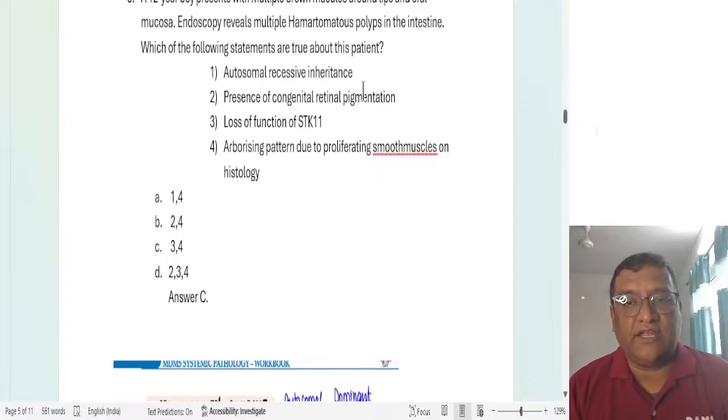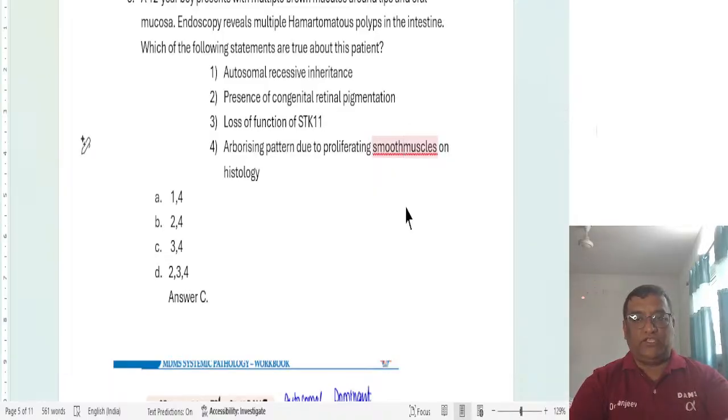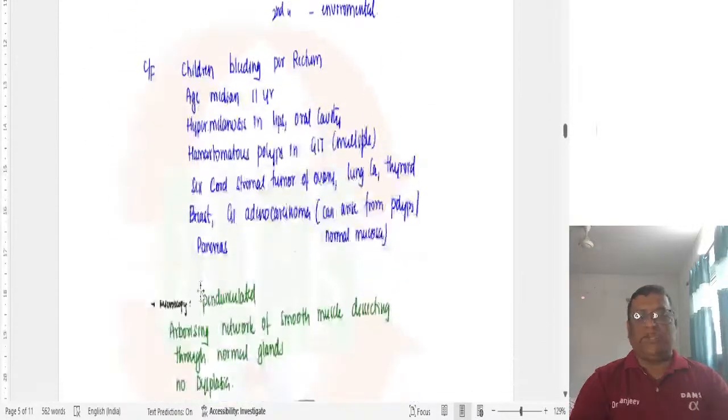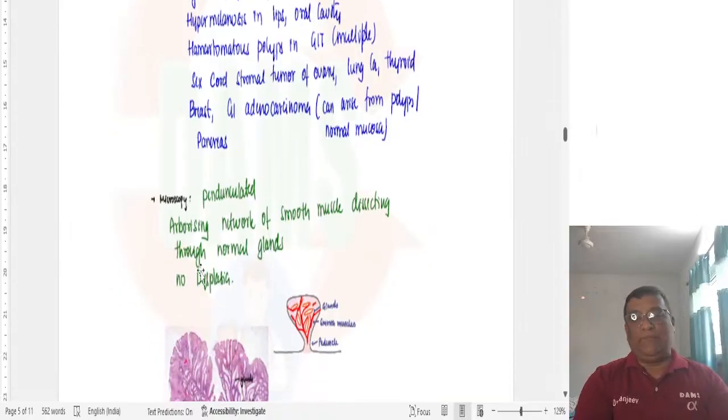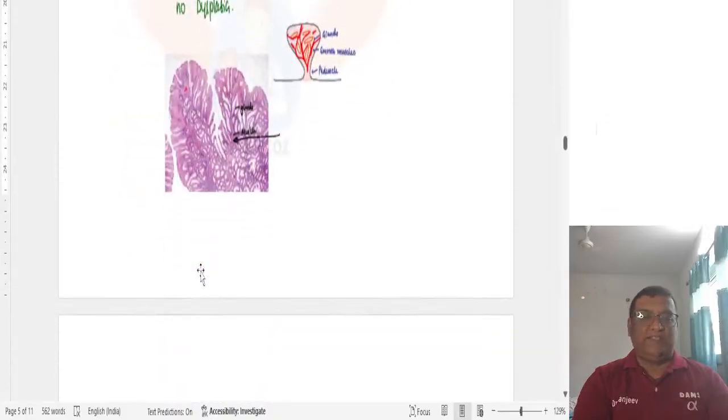Presence of congenital retinal hyperpigmentation? No, this would be seen with APC if it is seen. Loss of STK11? Yes, that is what is STK11 or LKB1 mutation. And arborizing pattern due to proliferating smooth muscles on histology. That is also true. So 3 and 4 are true in this. Answer is C. Again, this is your class notes, which we had discussed about Peutz-Jeghers syndrome in the class. It is autosomal dominant. STK11 or LKB1 mutation. Then children. Then hypermelanosis in the lips and oral cavity. That is what they have given. Multiple hamartomatous polyps in the GIT. These two were given. Median age we had written was 11 years. Question was 12 years here. And there is arborizing network of smooth muscle dissecting through the normal glands. And there will be no dysplasia here. This is what is the histological finding. Peutz-Jeghers syndrome was the answer there.